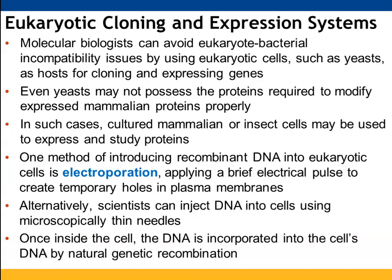Another way to address prokaryotic versus eukaryotic incompatibility in how DNA is transcribed and translated is to use another type of eukaryotic cell — for example, yeast — which would be organized more similarly. Yeast don't necessarily have all the proteins needed to modify mammalian proteins, given the transcription factors involved, but they offer one approach. Another option is culturing cells, whether mammalian cells or insect cells.